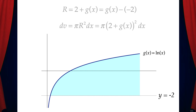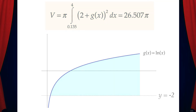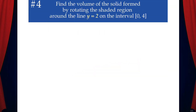The volume of the solid is pi times the integral from 0.135 to 4 of the quantity (2 plus g of x) squared dx, which equals 26.507π.